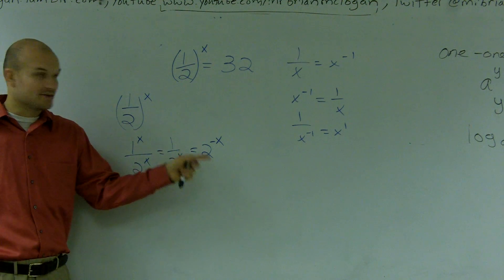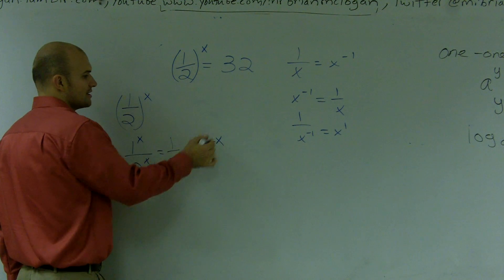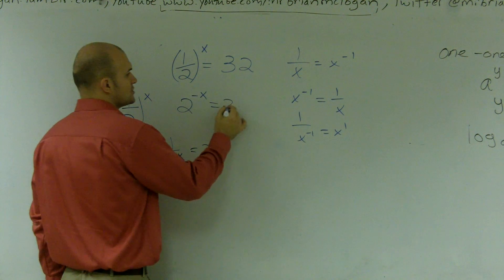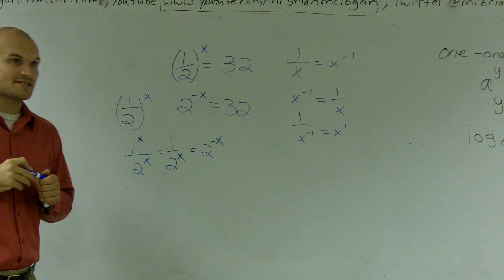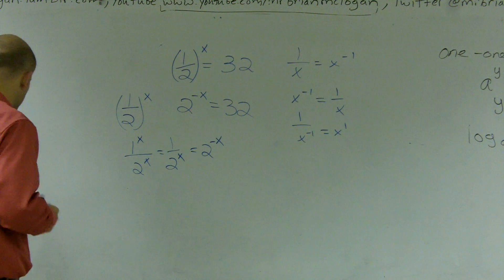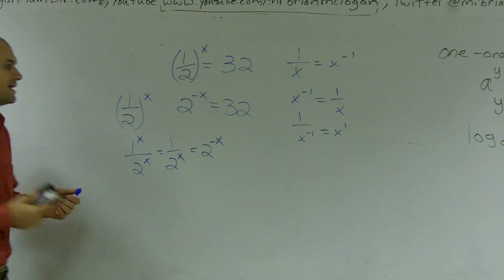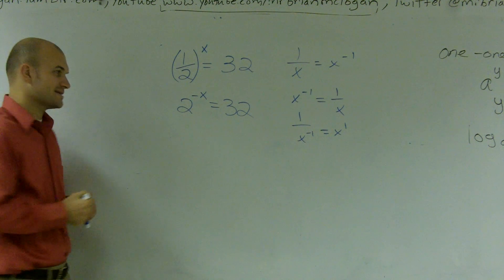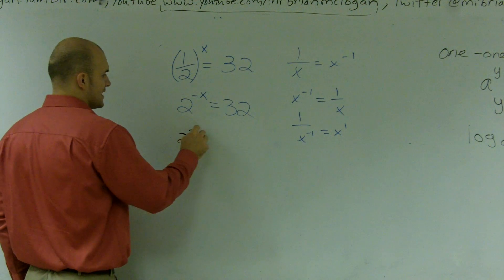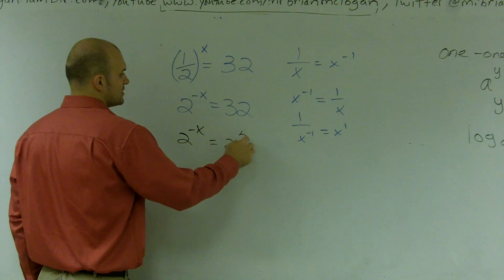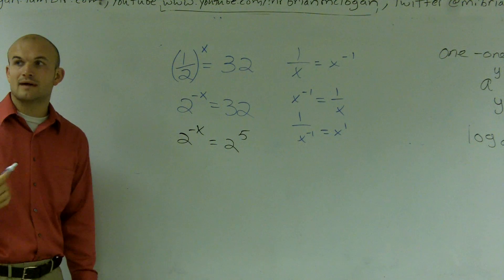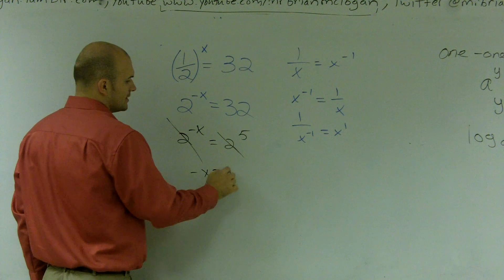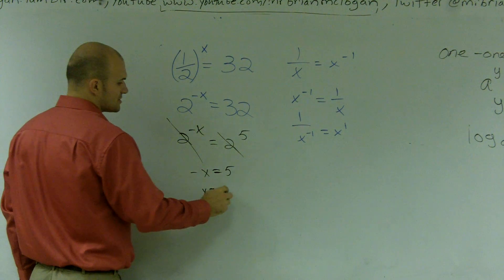So therefore, I rewrite this as 2 raised to the negative x. So I now have 2 to the negative x equals 32. Now, by using my inverse properties, can I rewrite 32 as a base 2? And the answer is yes. I can write this as 2 to the negative x equals 2 to the fifth power. My one-to-one property cancels out: negative x equals 5, so x equals negative 5.